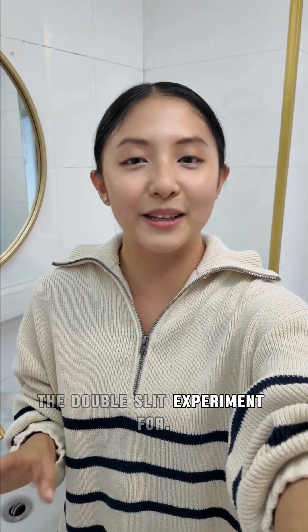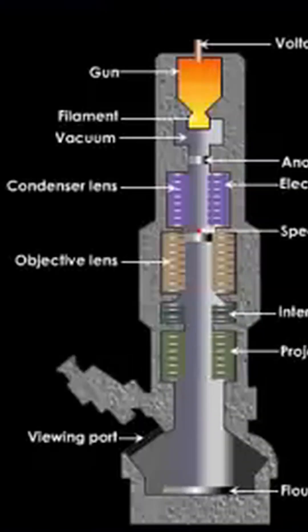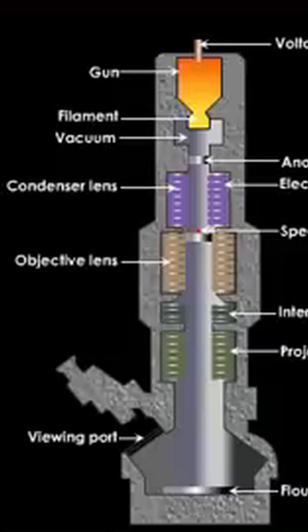The double-slit experiment for electrons uses an electron gun, which uses a high voltage to create an electric field to push the electrons forward.